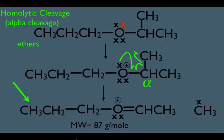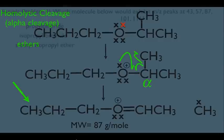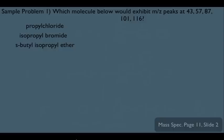Let's try a sample problem. The question asks: which molecule would exhibit m/z peaks at 43, 57, 87, 101, and 116? We have three molecules: propyl chloride, isopropyl bromide, and S-butyl isopropyl ether. Our plan of attack is to look at all the possible ways each molecule can fragment, determine each fragment's mass, and see which matches the given peaks at 43, 57, 87, 101, and 116.